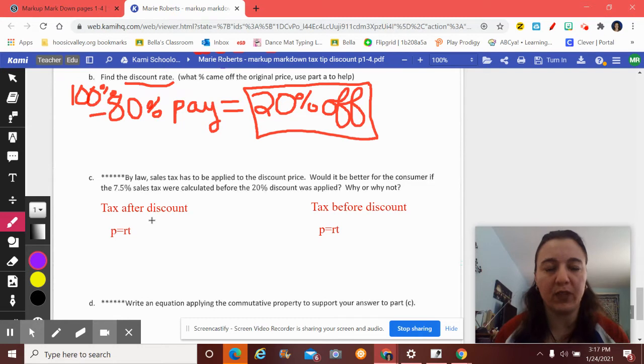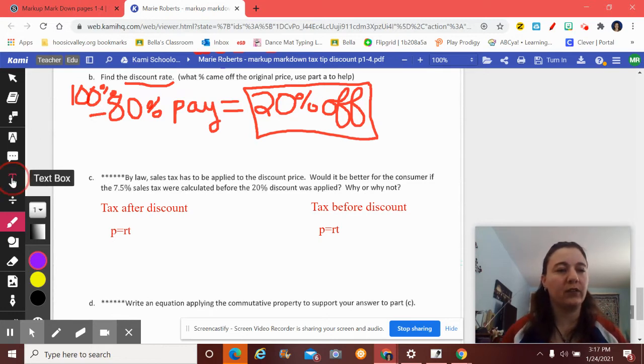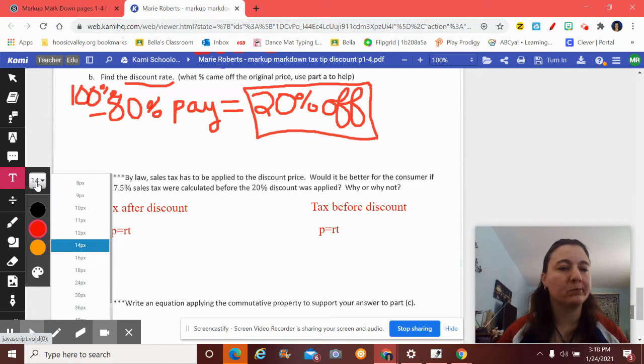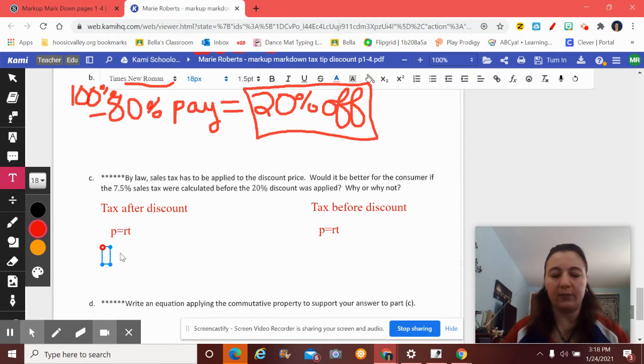By law, sales tax has to be applied to the discount price. Would it be better for a consumer if the 7.5% sales tax was calculated before the discount? Why or why not? So a lot of times if I ask a question, let's just do all the work to answer it. I wrote down this time, instead of my percent proportion, I did purdy. Purdy is great when you have the rate and the total.